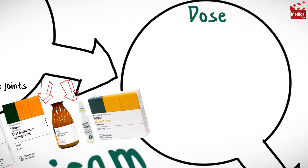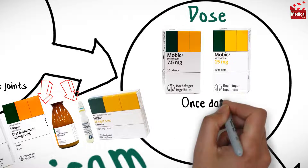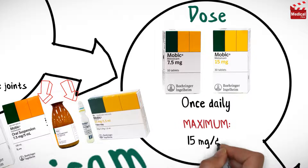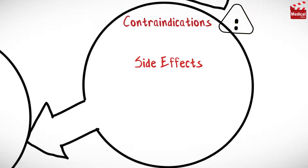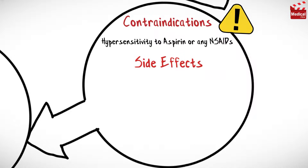The usual dose of meloxicam is 7.5 to 15 milligrams once daily, and the maximum dose is 15 milligrams per day. It is contraindicated in cases of hypersensitivity to aspirin or any other non-steroidal anti-inflammatory drug.